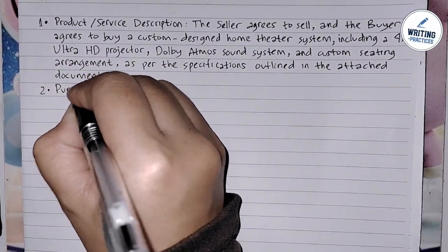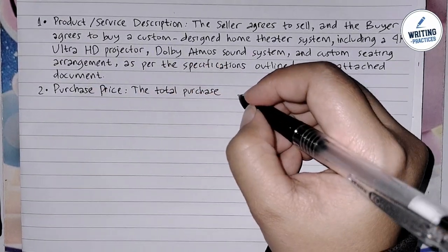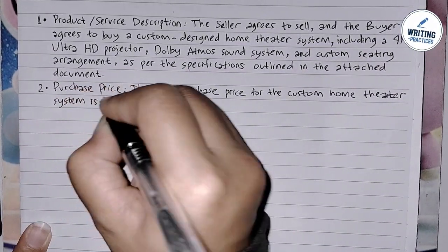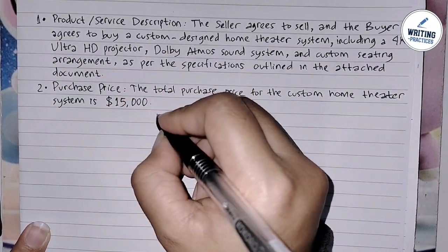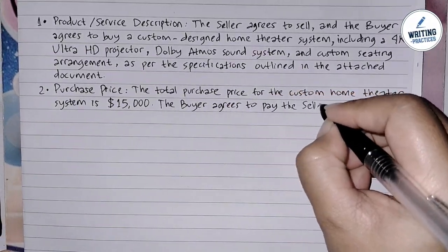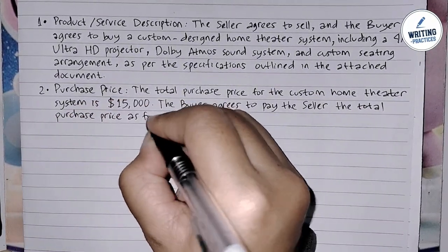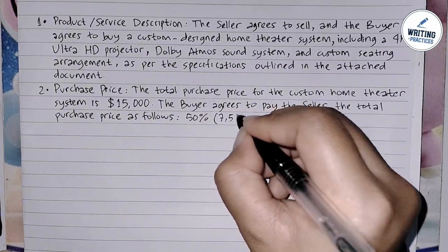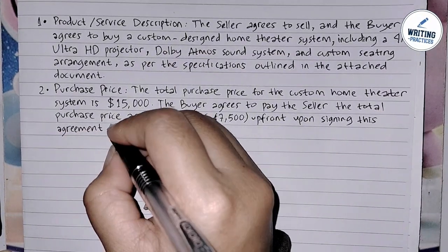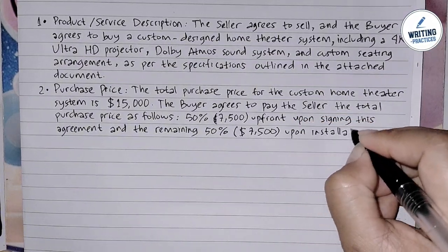In the second point, talk about the purchase price. Specify the total cost of the product or service and the payment terms, including any upfront deposits and final payments. For example: '2. Purchase Price: The total purchase price for the custom home theater system is $15,000. The buyer agrees to pay 50% ($7,500) upfront upon signing this agreement, and the remaining 50% ($7,500) upon installation completion.'